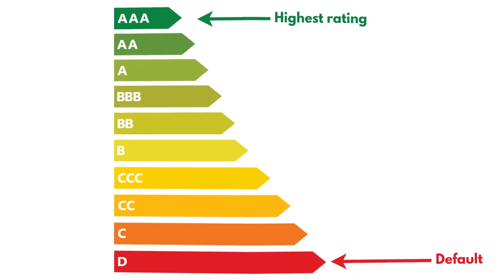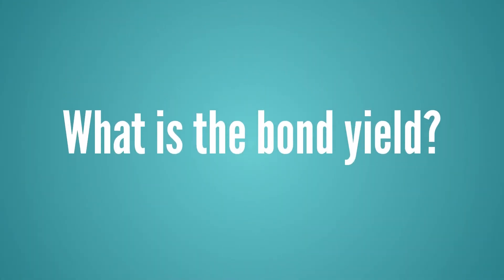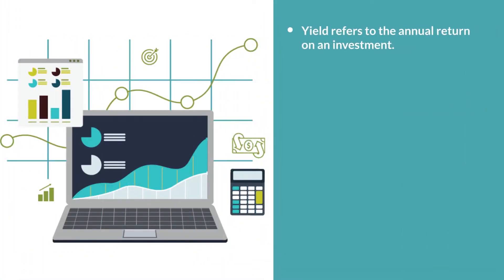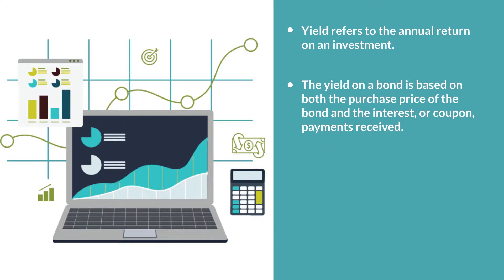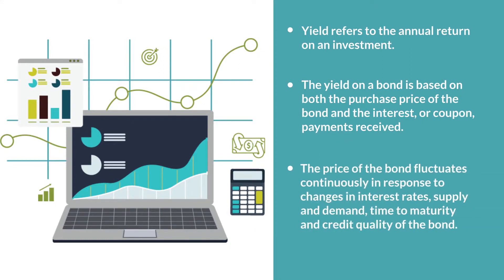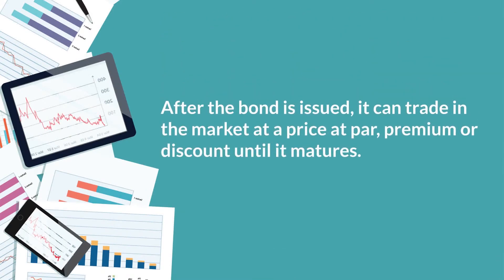Now that you know what a bond is, the next question to ask is: what is the bond yield? Yield refers to the annual return on investment. The yield on a bond is based on both the purchase price of the bond and the interest or coupon payments received. Although a bond's coupon is usually fixed, the price of the bond fluctuates continuously in response to changes in interest rates, supply and demand, and time to maturity and credit quality of the bond. After the bond is issued, it can trade in the market at a price at par, premium, or discount until it matures.